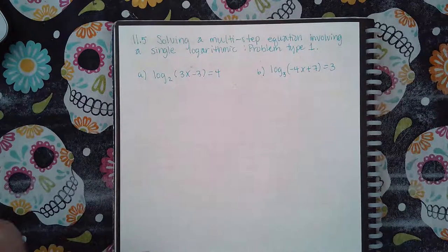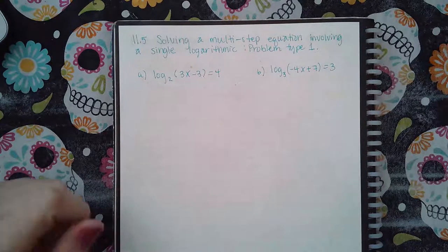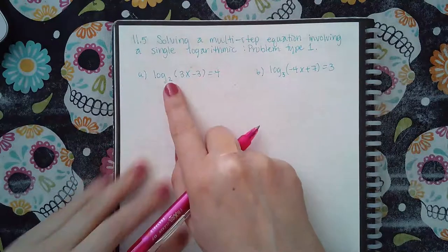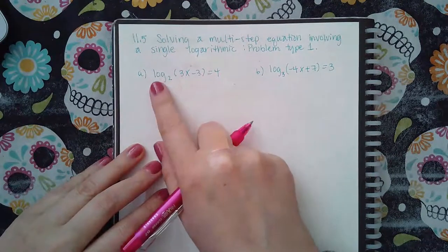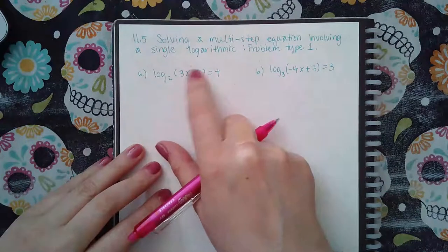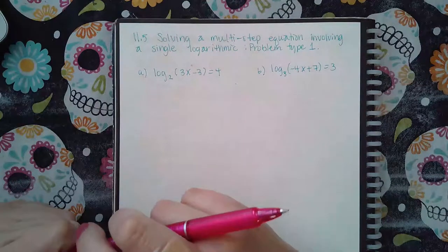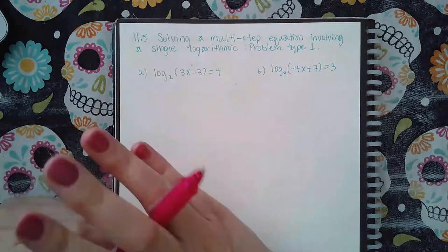Okay, so this is solving a multi-step equation involving a single logarithm, type 1. I cannot do the change of base just yet because if I try to do the change of base, I'm going to have ln of the argument over ln of the base, and the argument is going to have a variable in it. You cannot do that in your calculator when your argument has a variable.